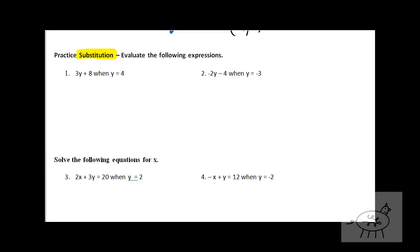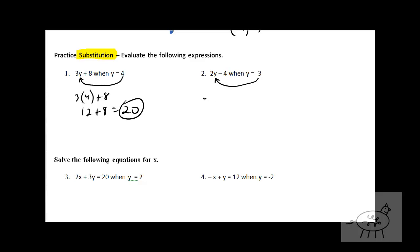Basically, this first stuff is just a little bit of practice to explain what substitution is. Literally, if y is equal to four, I am going to substitute that in for the y, so you get three times four plus eight. So I get twelve plus eight, and my answer for this one is twenty. Same thing here — I'm going to take that negative three, plug it in where the y is, so negative two times negative three minus four. Be careful when you multiply: you get positive six minus four, so my answer is two.